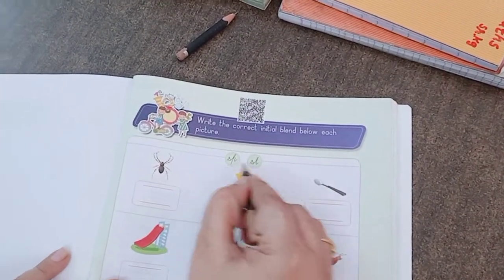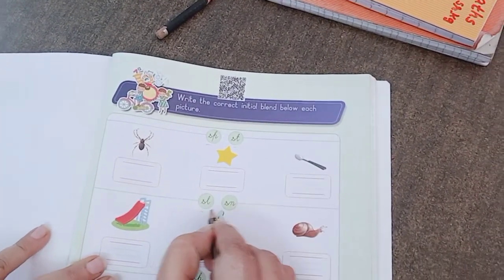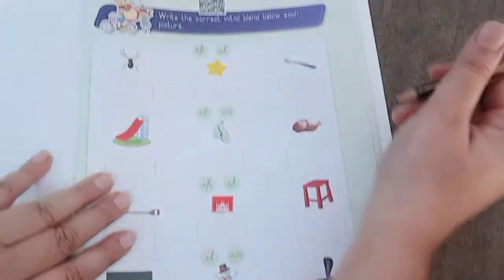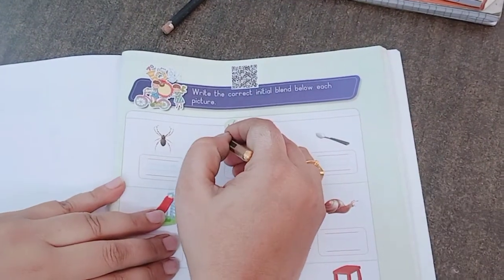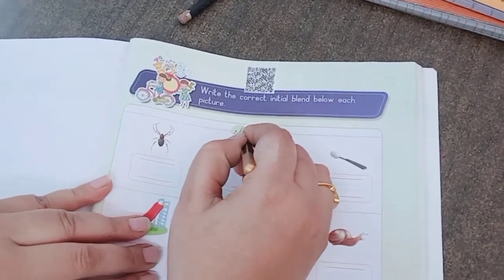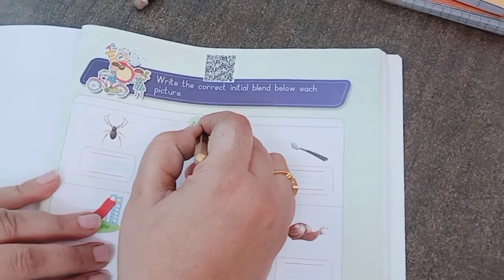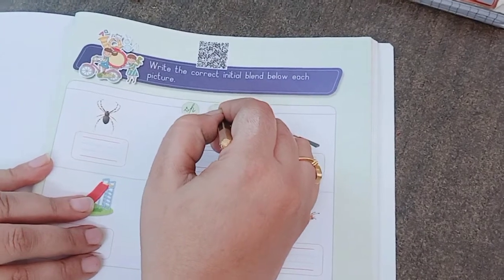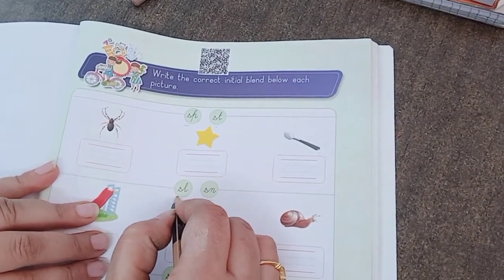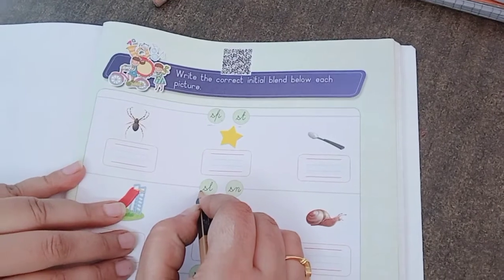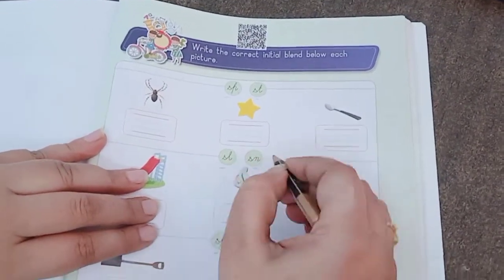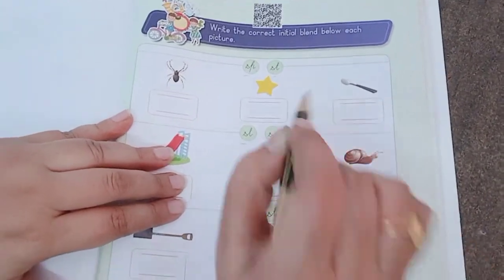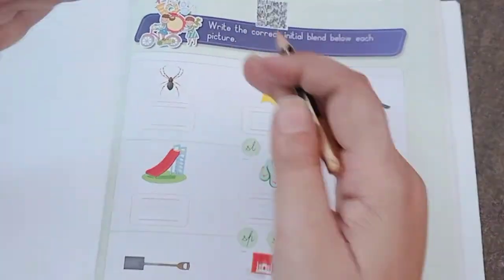So today we are introducing SP, ST, SL, SN. Today we have four blends that are used. SP means S and P, we can hear both letter sounds. ST means S and T. SL means S for S and L for L. SN means S and N. So this is a blend of sound.